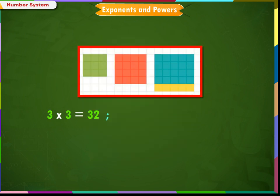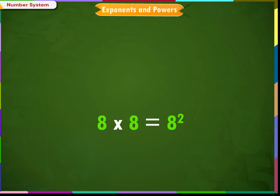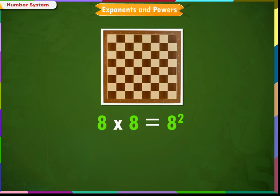In the same way, we can count 3, 4, 5, 6 and 7 square units. The results are tabulated as shown on the screen. In a chess board, there are 8 squares in one row and 8 such rows, which means in all there are 64 square units.